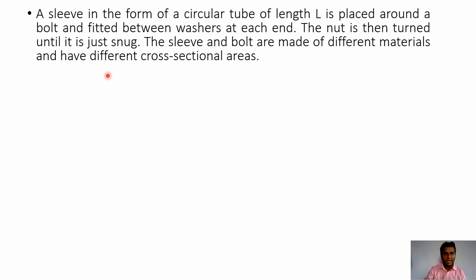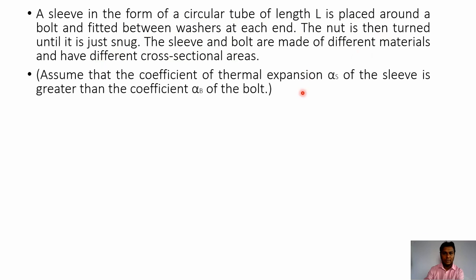The example is that a sleeve in the form of a circular tube of length L is placed around a bolt and fitted between washers at each end. The nut is then turned until it is just snug. The sleeve and bolt are made of different materials and have different cross-sectional areas. It is given that the coefficient of thermal expansion alpha_s of the sleeve is greater than the coefficient alpha_b of the bolt.